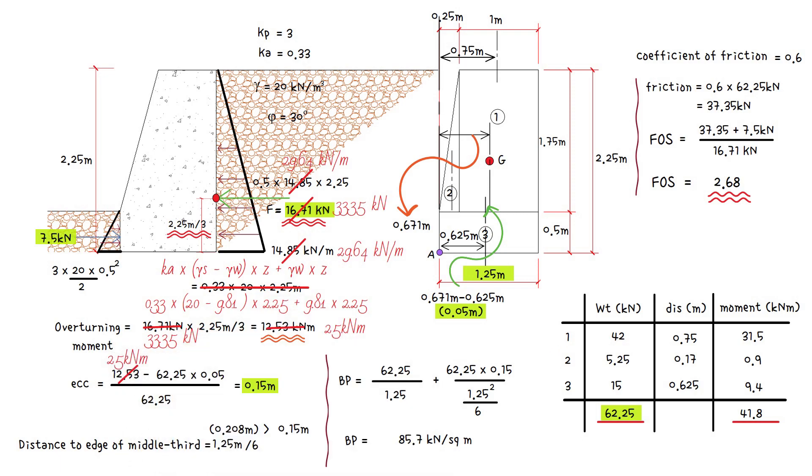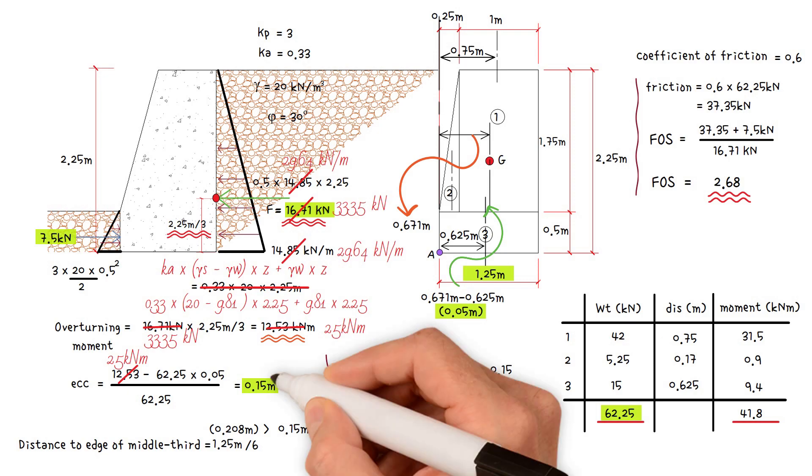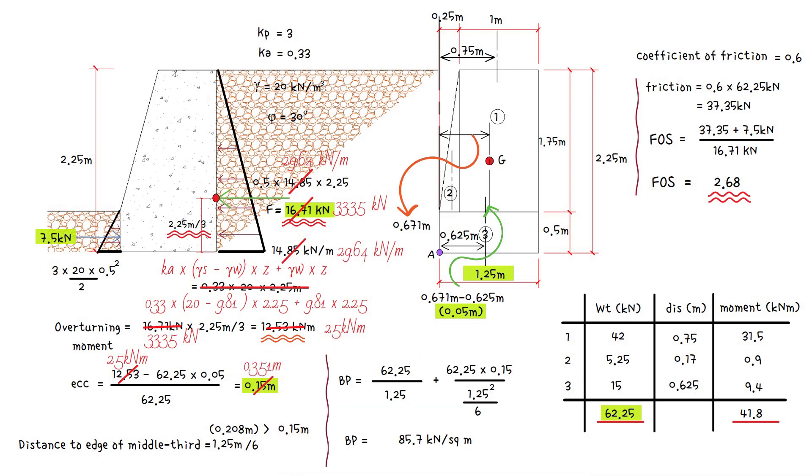As a consequence, eccentricity of the vertical force equals overturning moment 25 minus the vertical force 62.25 times the distance from base center 0.05 meters, divided by the vertical force 62.25. This gives us a value of 0.352 meters, which is greater than 1.25 meters divided by 6.